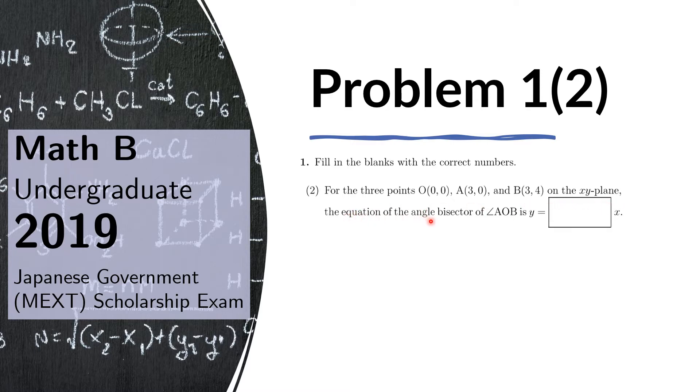the equation of the angle bisector of angle AOB is y equals blank x.